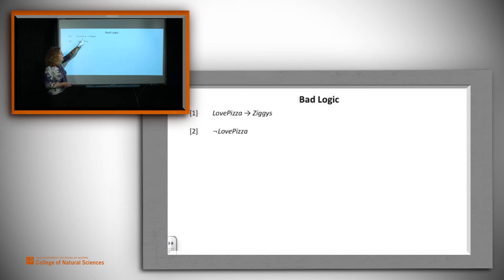Let's look at what went wrong with the logic. We're told that if you love pizza, you go to Ziggy's, and we're told not love pizza. What can we get from this? They got not Ziggy's. How do they do that? Well, maybe try to apply modus ponens to one and two, but modus ponens doesn't do that. In order to apply modus ponens, we'd have to have love pizza, and we don't. So that isn't it.